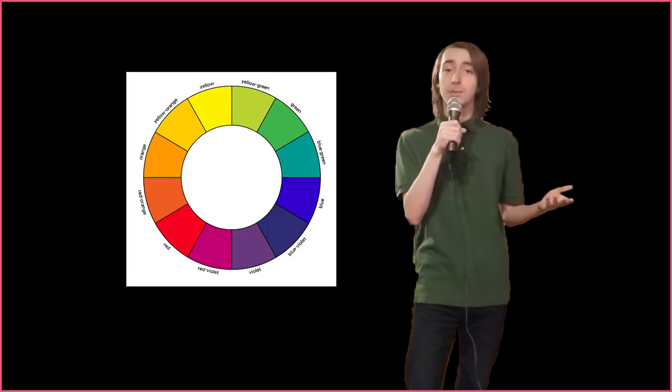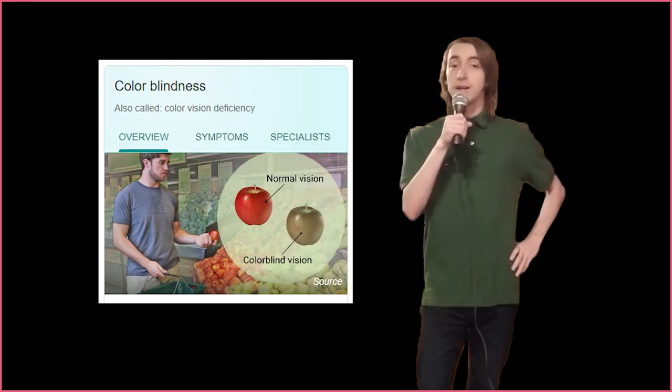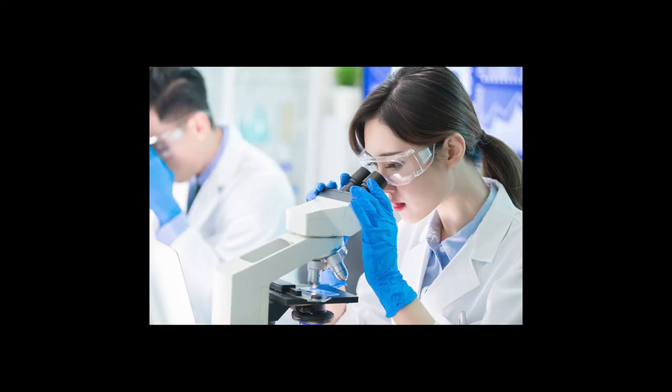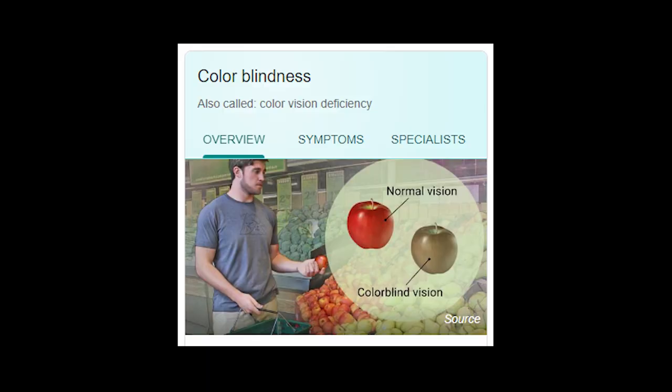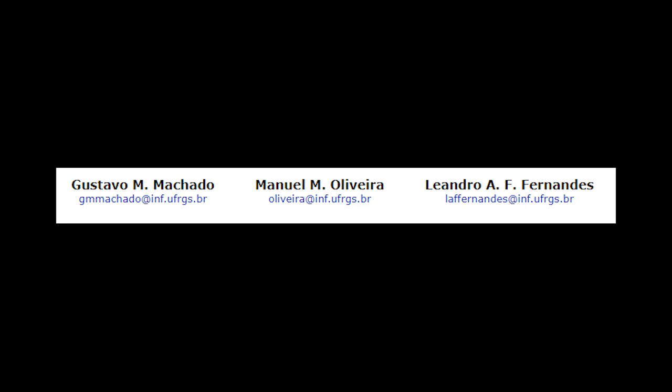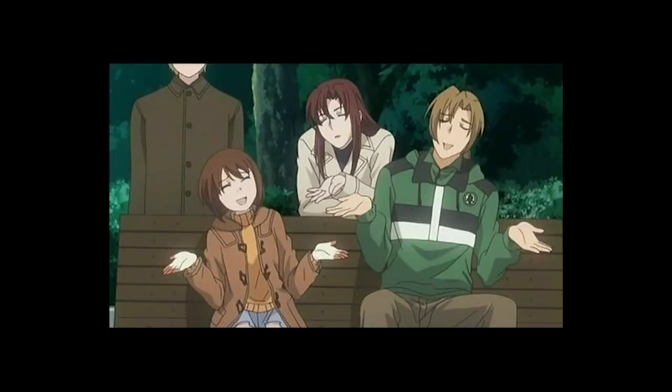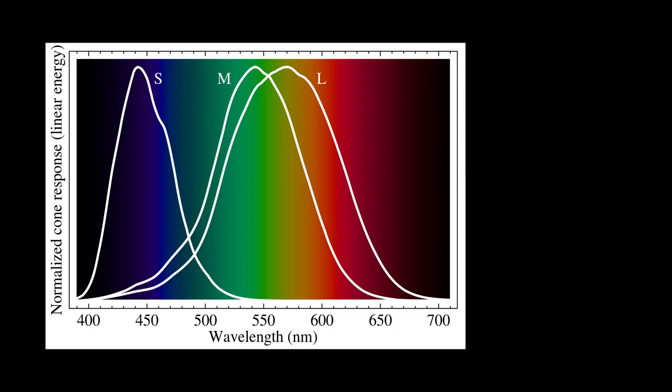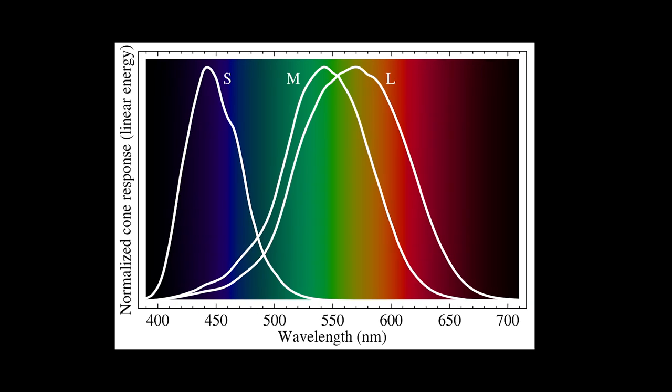Now, knowing how we see color is cool and all, but what about colorblindness? Research on simulating colorblindness was lacking until 2009 when Machado et al published their paper, A Physiologically Based Model for Simulation of Color Vision Deficiency. And at this point, it's still the only good paper on the subject. Their model is based on the two-stage theory of color vision, which takes our model from earlier one step further.